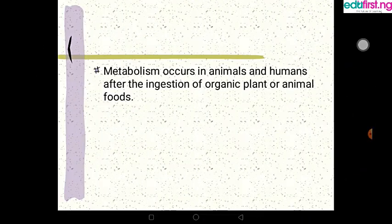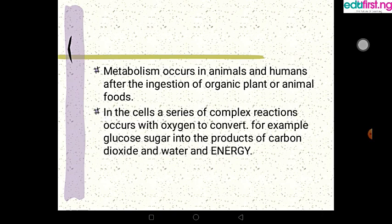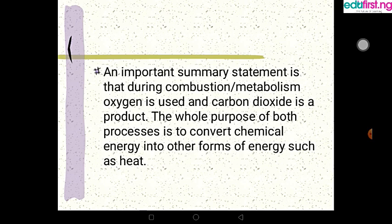So metabolism causes an animal, human, when they ingest food which can be organic plants or animals, and in the cell a series of complex reactions. Oxygen has been converted, for example glucose, sugar, into the product of carbon dioxide and water. So metabolism is basically converting organic matter into carbon dioxide, water, and energy.